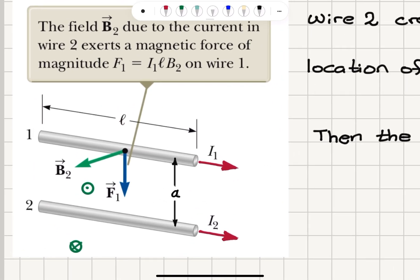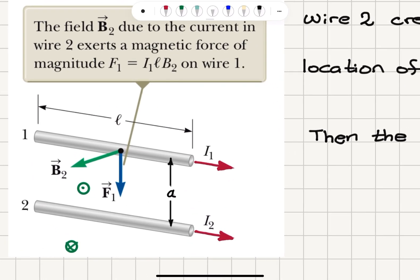Let's look at two wires that carry steady currents I1 and I2, pointing in the same direction. These two wires are at a distance A from each other and they have length L.